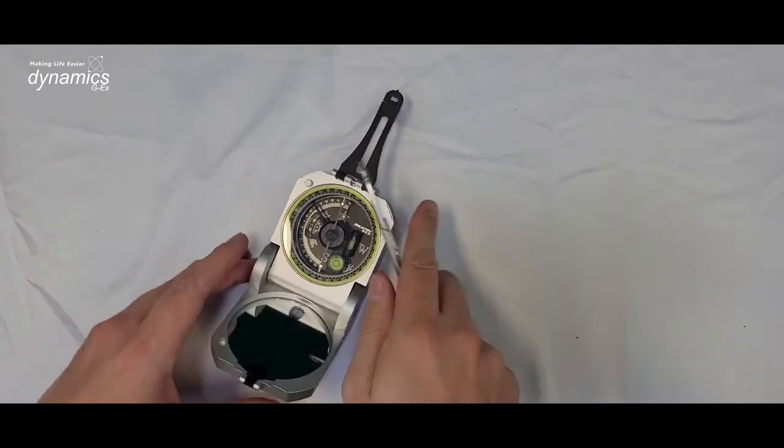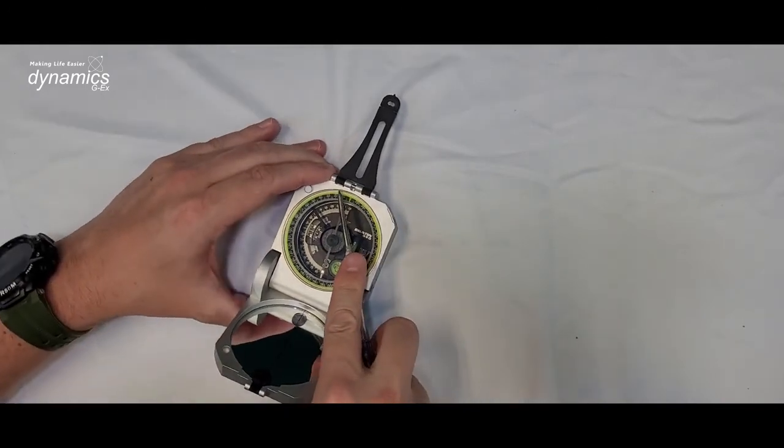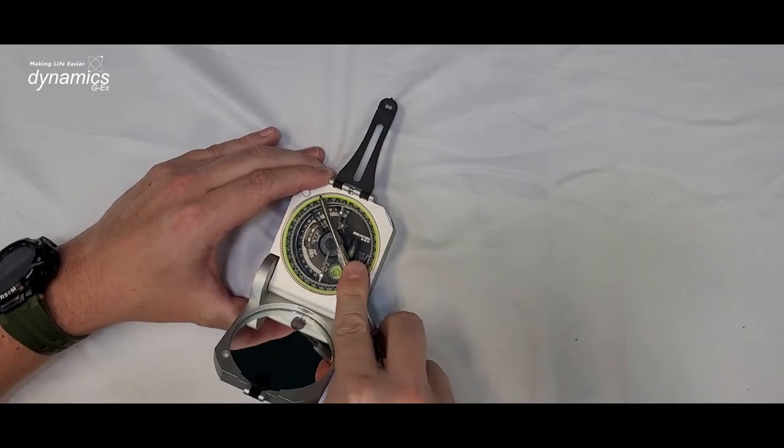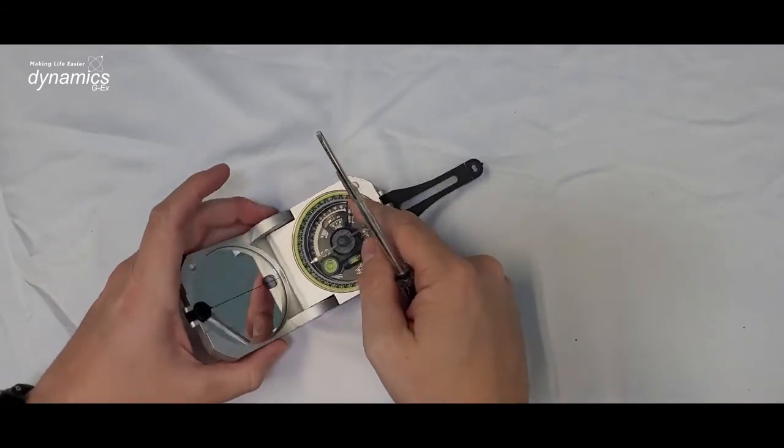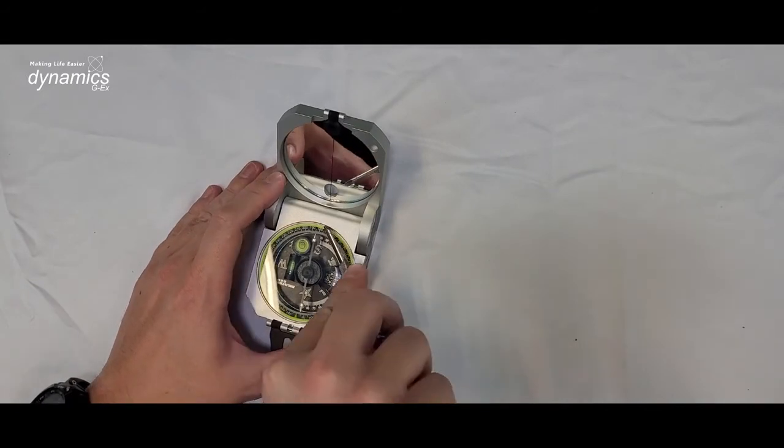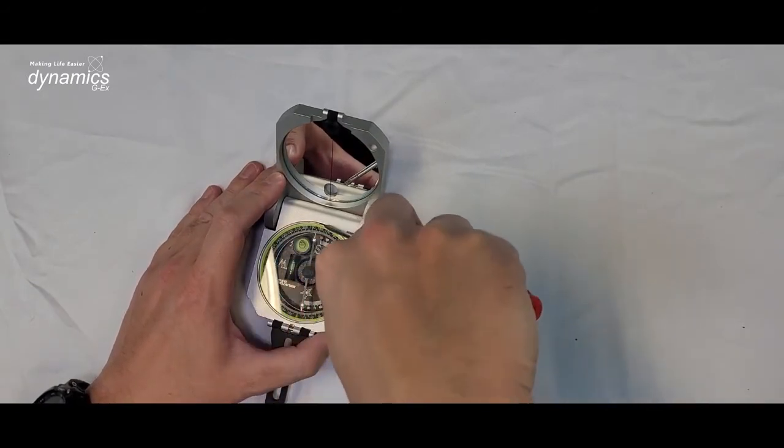One thing you do want to do is push on this side of the ring, the opposite side to where you put it in, and that means that the ring is located evenly all the way around so when you come to put it back out it's easy to get your screwdriver back in.